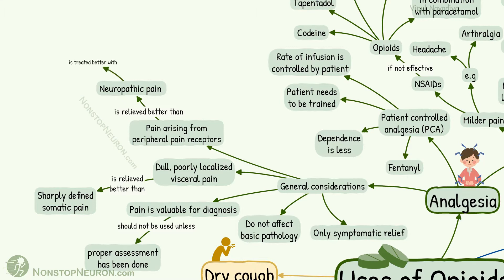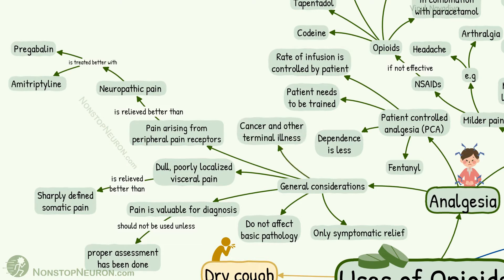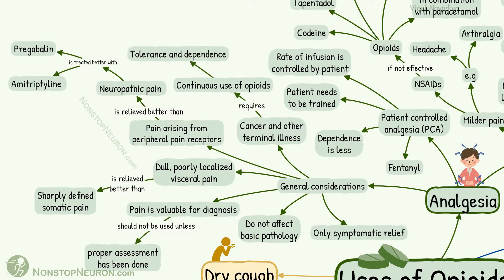Neuropathic pain is treated better with pregabalin or amitriptyline. Cancer and other terminal illnesses may require continuous use of opiates, which increases chances of development of tolerance and dependence. However, this should not limit best care and quality of life of the patient.